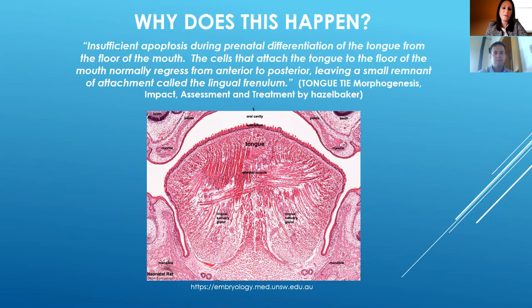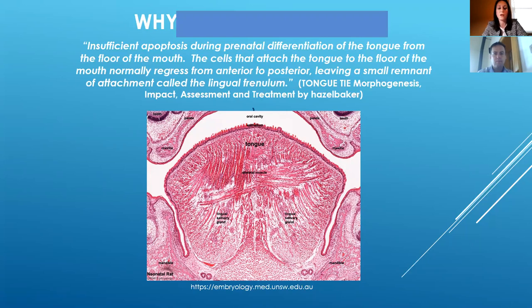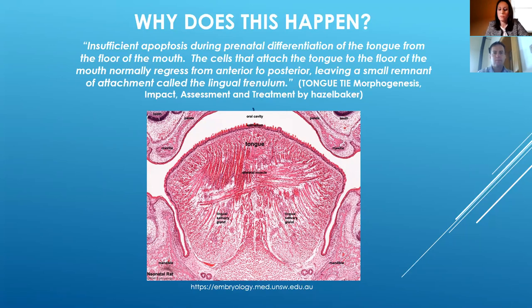Why does this happen? It is said that insufficient apoptosis during prenatal differentiation of the tongue from the floor of the mouth is responsible. The cells that attach the tongue to the floor of the mouth normally regress from anterior to posterior, leaving a small remnant called a lingual frenulum. This is discussed in the book Tongue Tie: Morphogenesis, Impact, Assessment and Treatment by Allison Hazel Baker, which is an excellent resource.